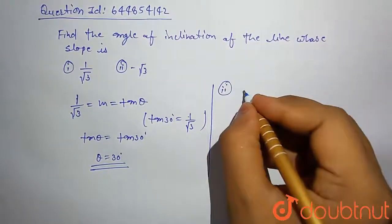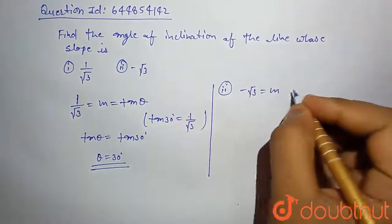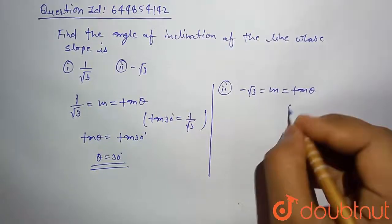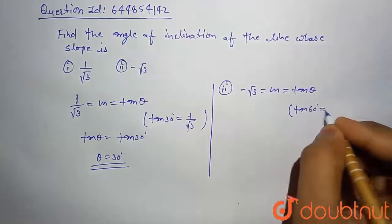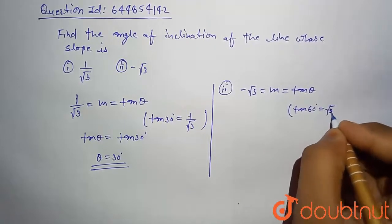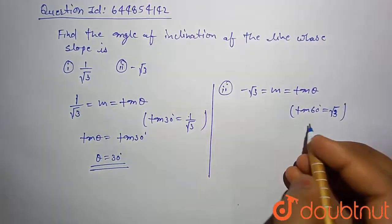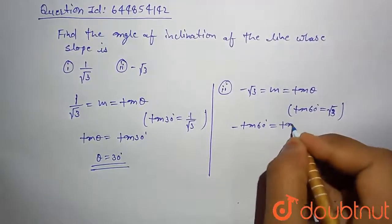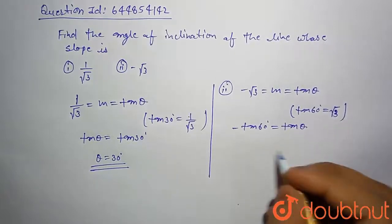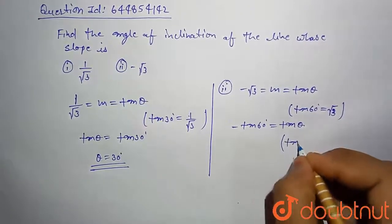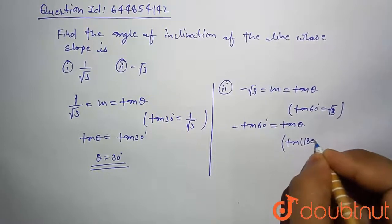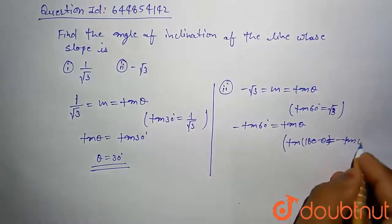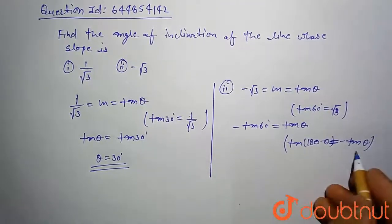Similarly, -√3 which is m equals tan θ. We know that tan 60 degrees equals √3, so we can write -tan 60 degrees equals tan θ. We know the formula tan(180° - θ) equals -tan θ. Just apply this formula here.